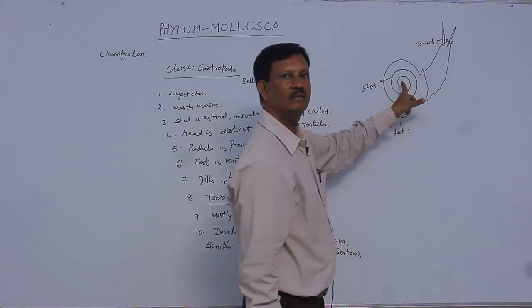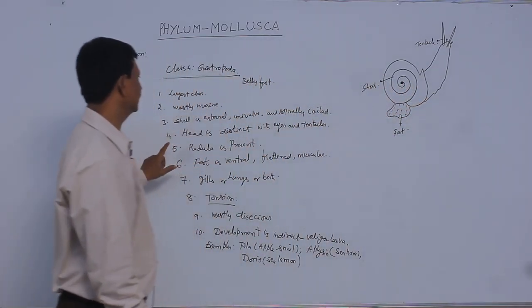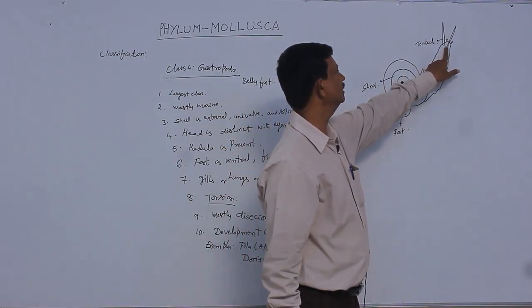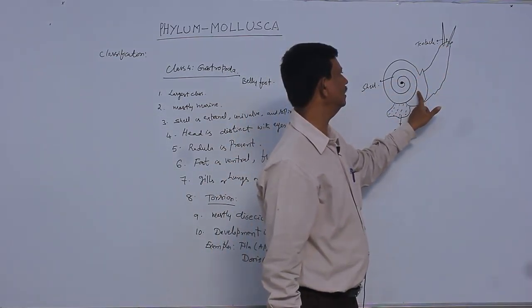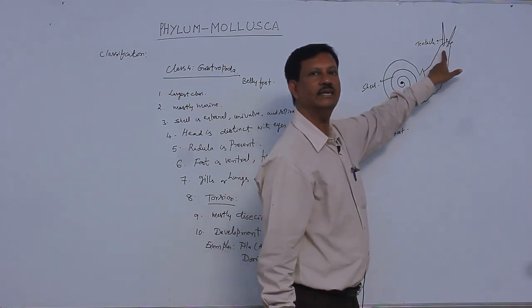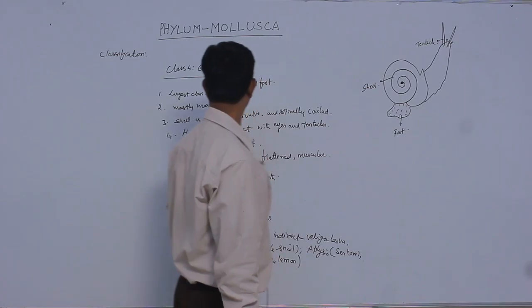The coiled shell contains visceral organs. The head is distinct and typically found inside the shell. At the time of food capturing, it comes out and takes the food material.